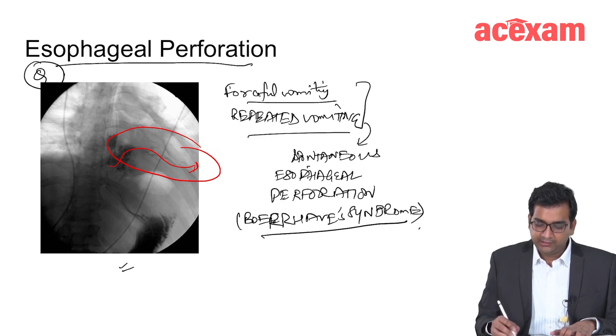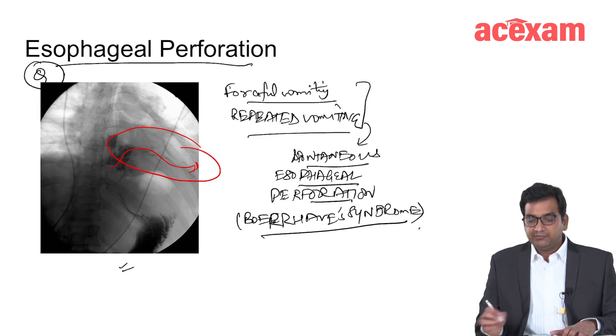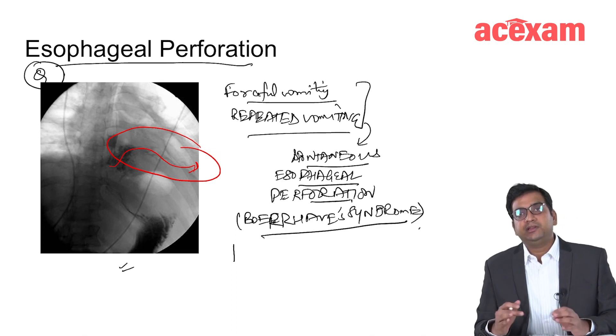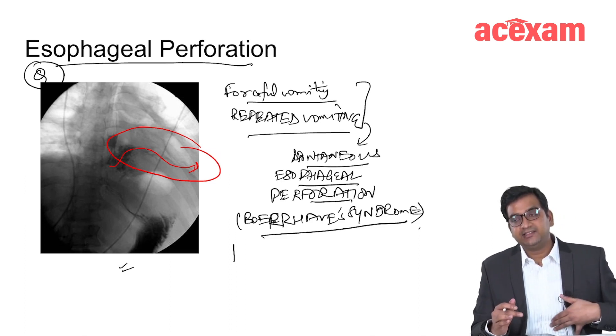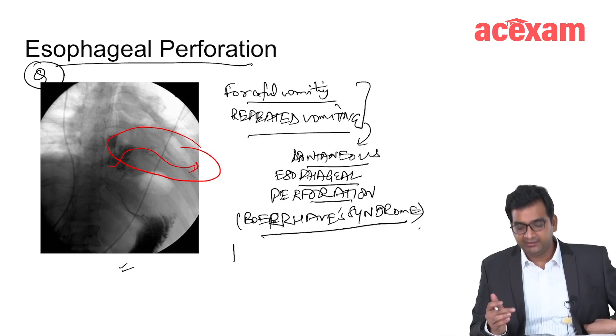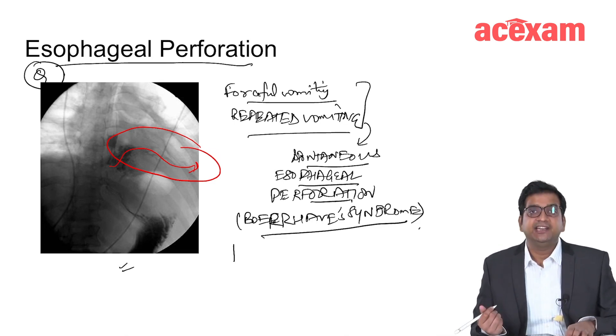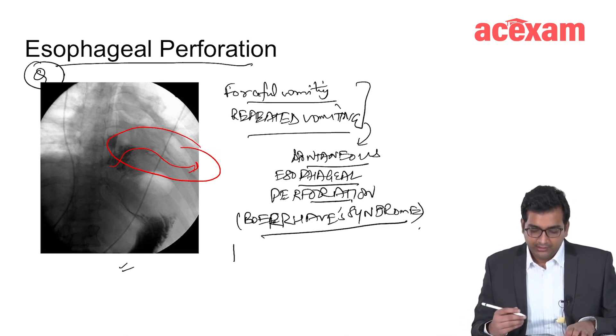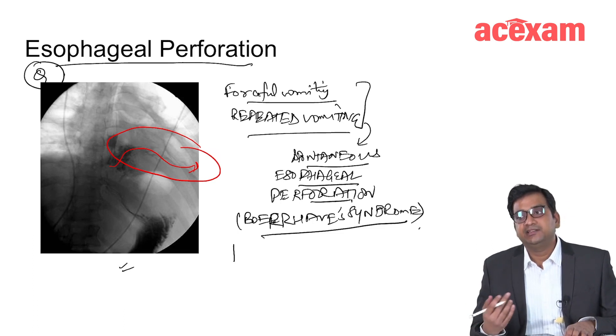Boerhaave syndrome is the spontaneous esophageal perforation which is generally a full thickness perforation of the esophagus and leads to the gastric acid or gastric secretions going into the left chest, leading to sepsis, mediastinitis, and fever.